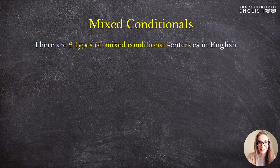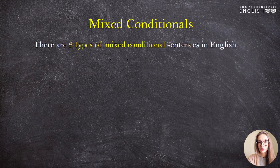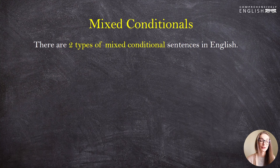The third conditional always speaks about a condition in the past and is absolutely unreal. So what are mixed conditionals? Mixed conditionals combine conditions from the past with results in the present, or conditions in the present with results in the past. It's always a combination of the second conditional and the third conditional — either your main clause is in the third conditional and the subordinate clause in the second, or vice versa. That's why we logically have two types of mixed conditional sentences.